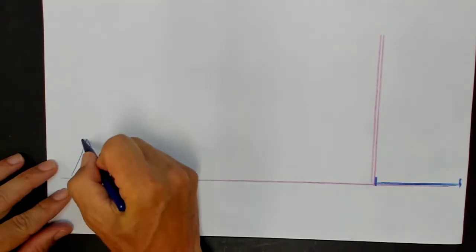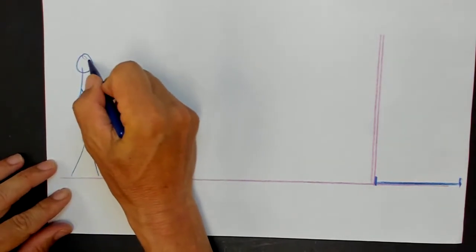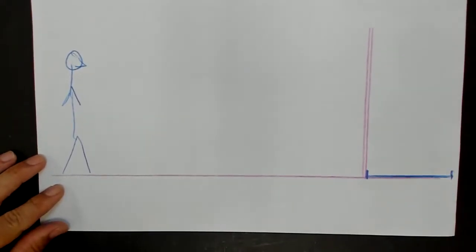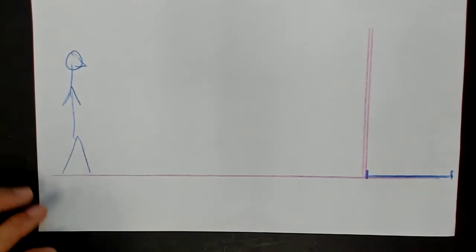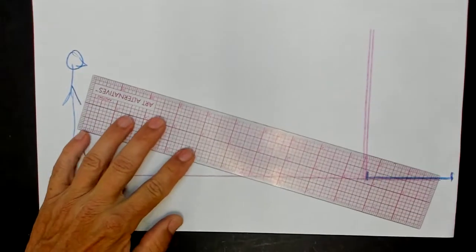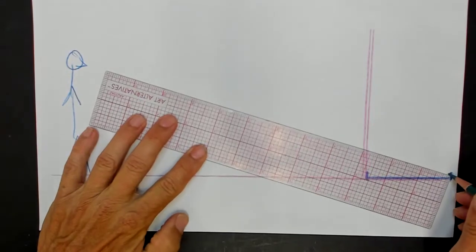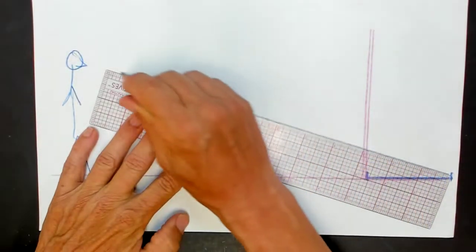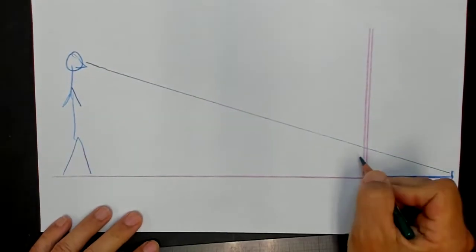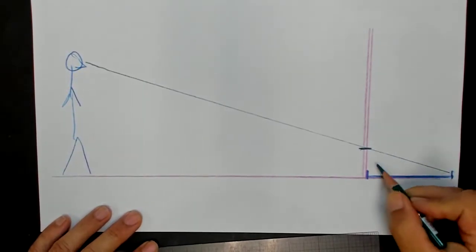So if you're standing here and you're looking at this object on the floor and we draw a line of sight to the viewer's eye, it's going to look like it's this deep.